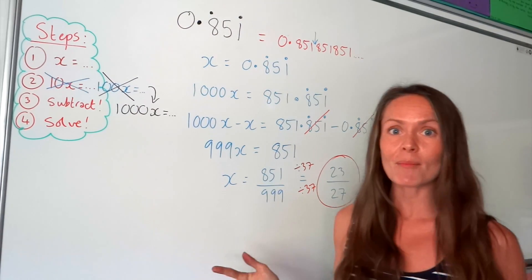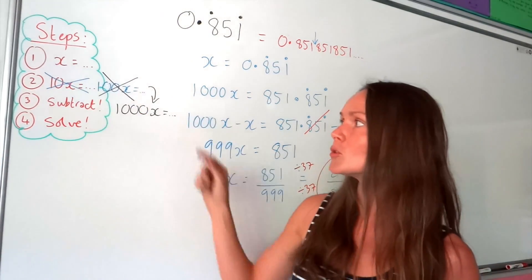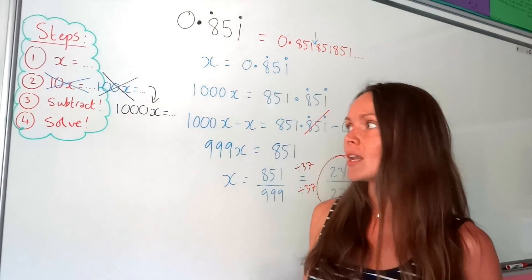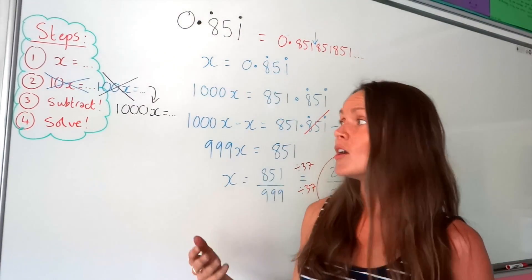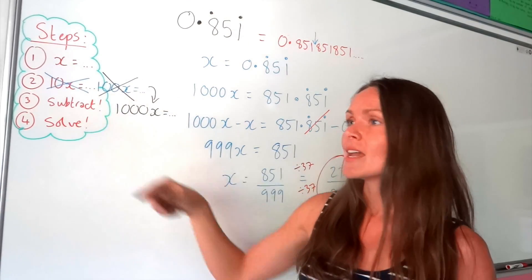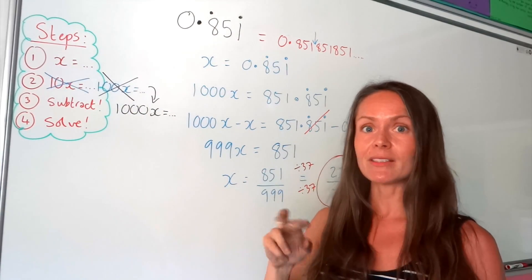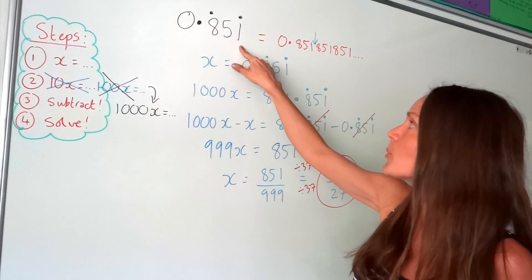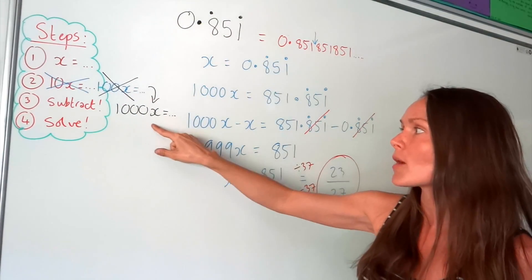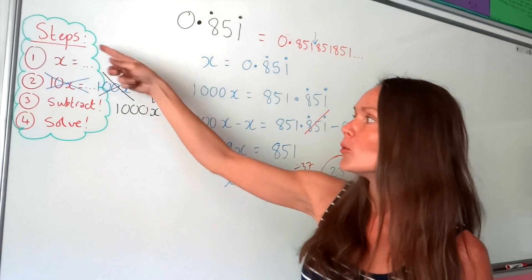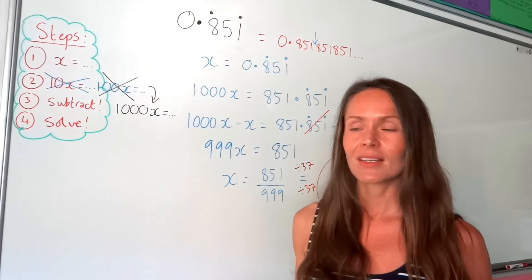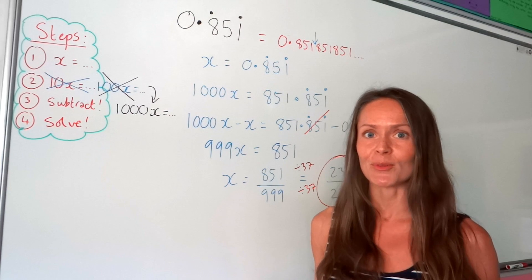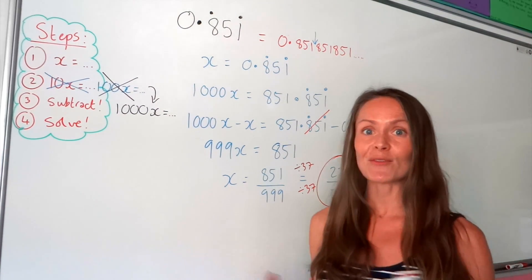I hope that makes sense. Just remember: step number 2 can change. If you've got one single number repeating, like 0.3333, you find 10x. If you've got two numbers repeating, like 282828, you work out 100x. And if you've got three numbers repeating, you work out 1,000x, and so on. All the other steps are the same, and just remember to simplify your fraction where possible.